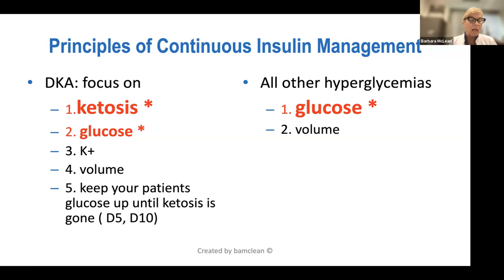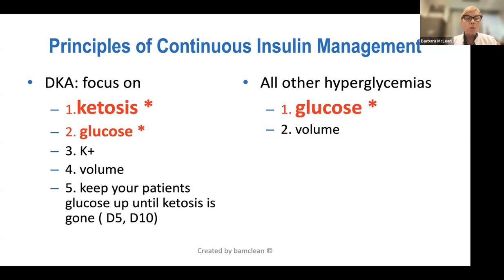Once ketosis resolves, patients should transition to long-acting insulin and intermittent sliding scale, either with meals or three times a day. The reason to keep a patient on continuous insulin is if they have ketosis — either hyperglycemic or euglycemic — you keep them on continuous IV insulin until you obliterate the ketosis. You must make them glycemic enough to match glucose to insulin and obliterate ketosis. That is your goal.